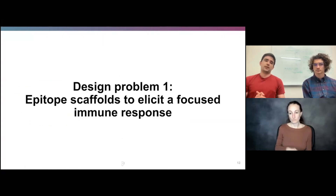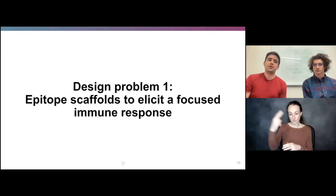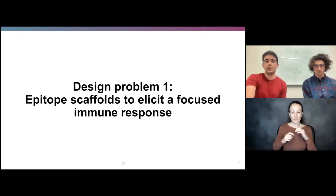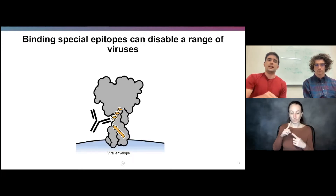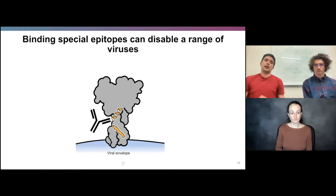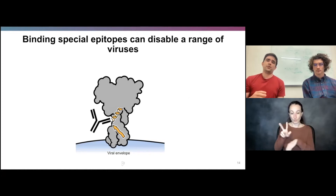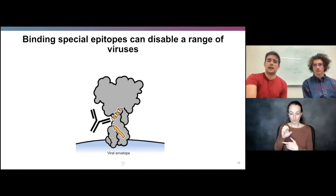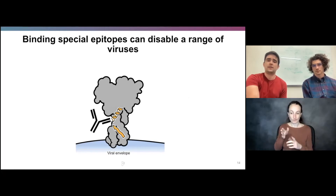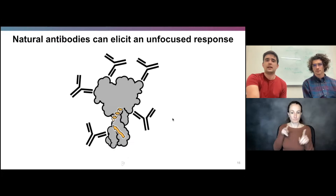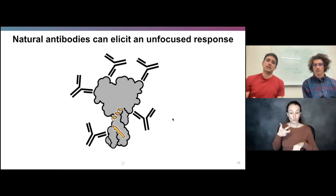I'll go over three design problems we've used for hallucination. The first is scaffolding epitopes to elicit a focused immune response. Antibodies that bind special privileged epitopes in viral receptors are able to disable a range of viruses. If we can coax the immune system into raising an antibody against a specific motif, it has the capability to be broadly neutralizing. The problem is that injecting one protein into an animal can raise antibodies against many different epitopes, not focused on that one privileged epitope.